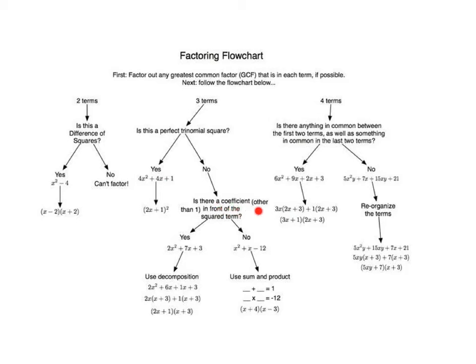Is there a coefficient other than one in front of the squared term? If yes, that makes it a complex trinomial, and we use either the decomposition method to factor it or the quick trick I shared with you. There are multiple ways of factoring other than decomposition or my quick trick - those are just two of many.